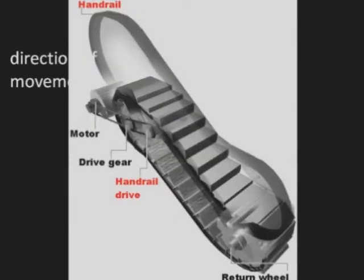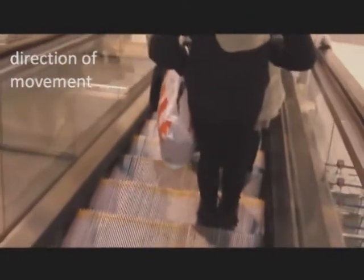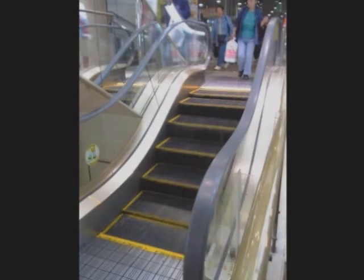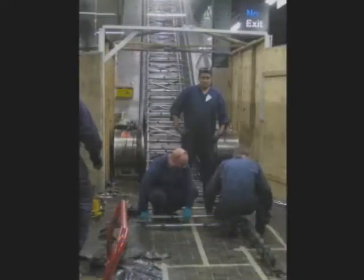Escalators are required to have moving handrails that keep pace with the movement of the steps. The direction of movement can be permanently the same or controlled by a person. There are two platforms in the escalator system: the top platform contains the motor and the main drive gear, while the bottom holds the step return sprockets.